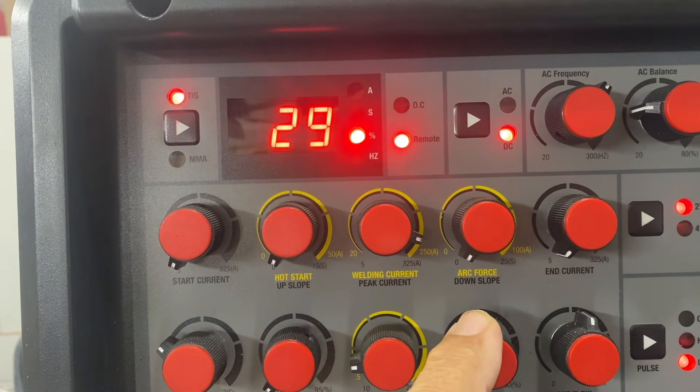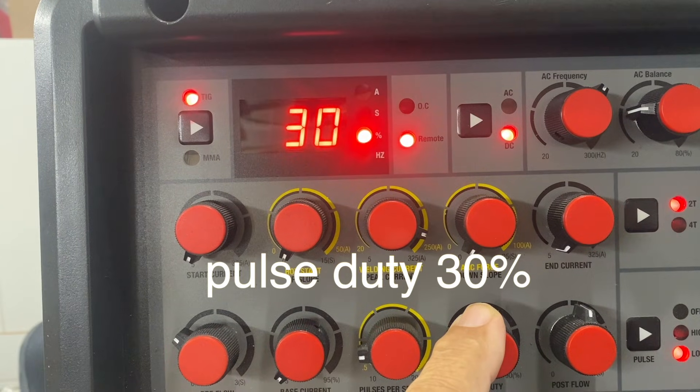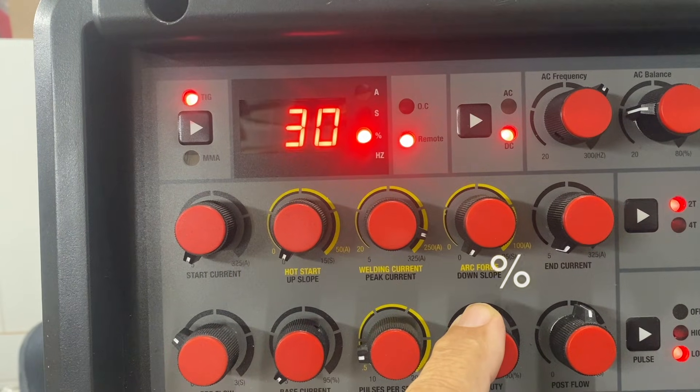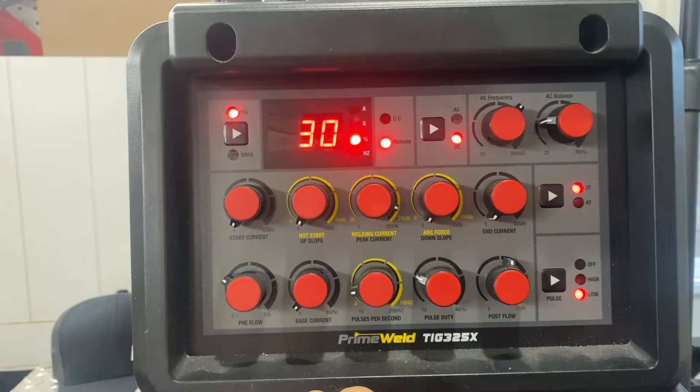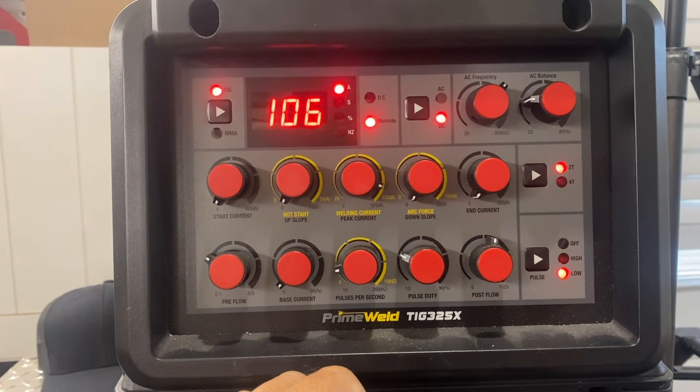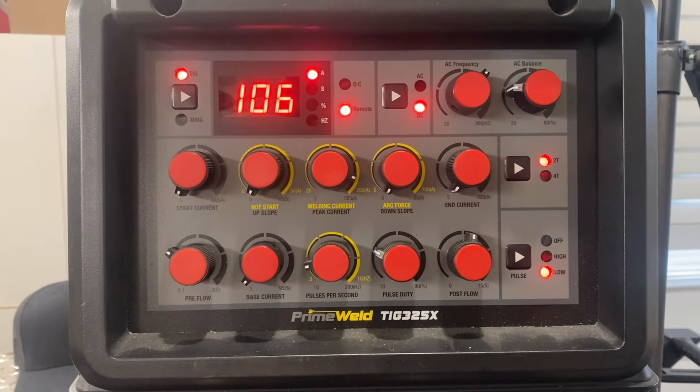Pulse width, also called pulse duty, at least on this machine, set at 30 percent. Sometimes it's called peak pulse. You need more amperage when you use pulse settings, so I set the amperage all the way up to 106 and just use a foot pedal.